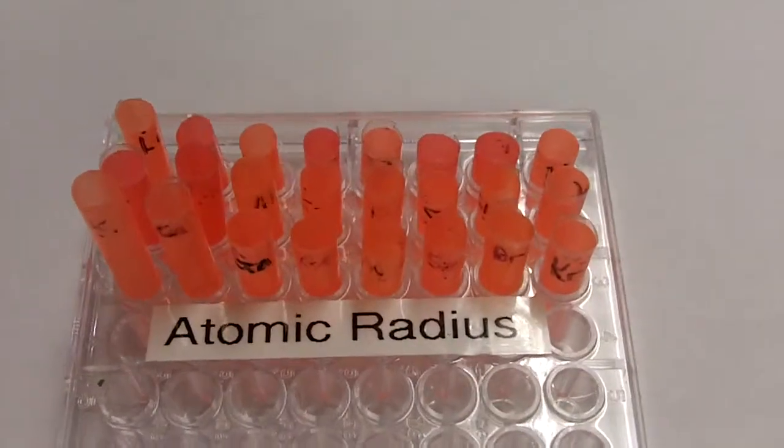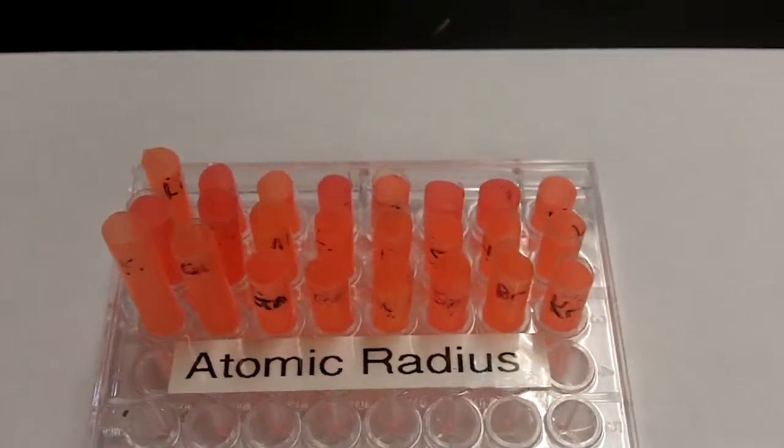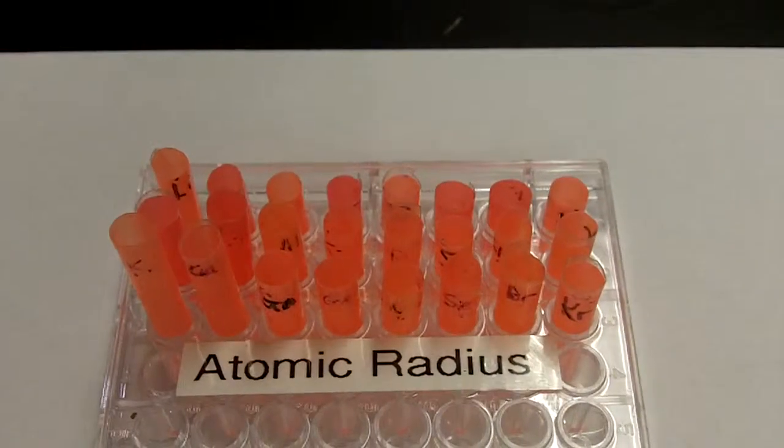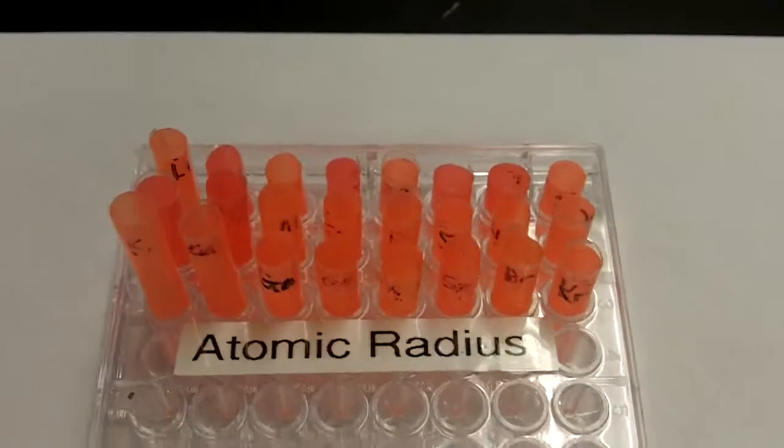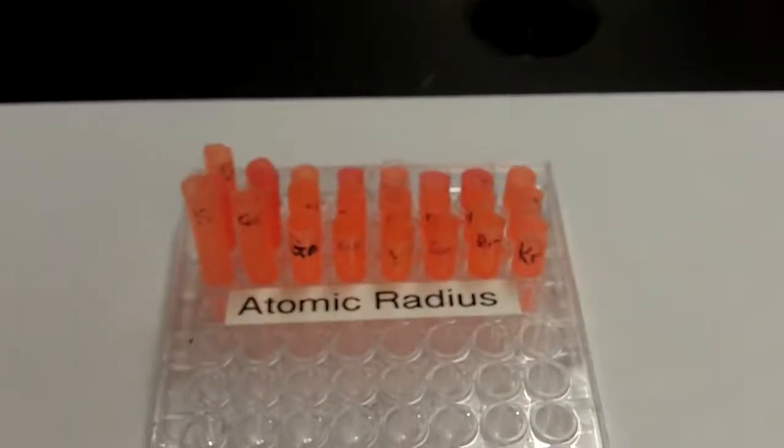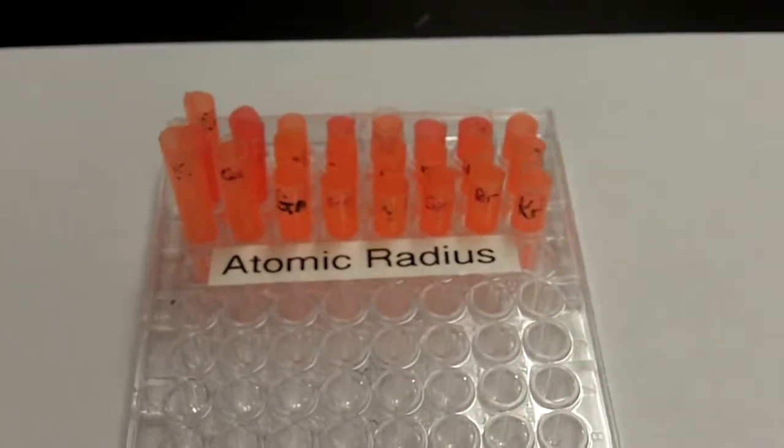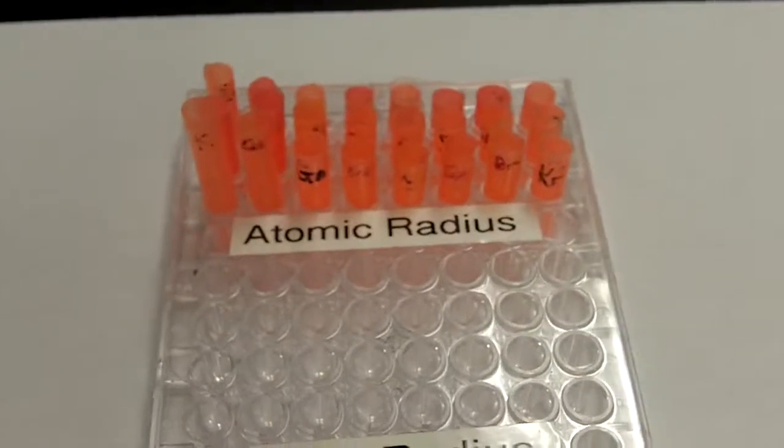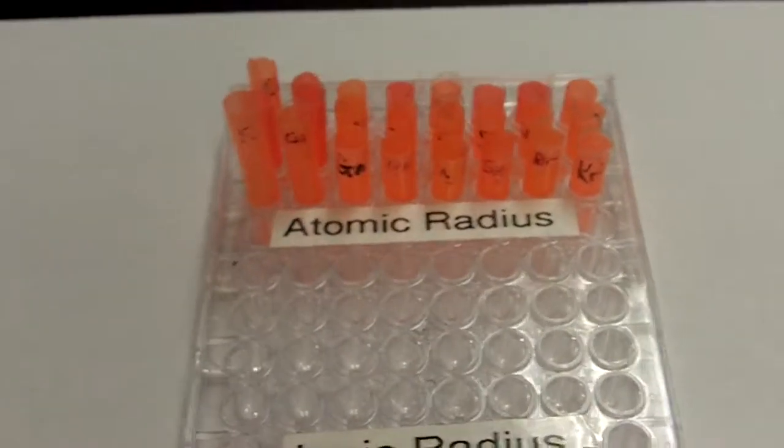Okay, and then here we're looking at atomic radius. Atomic radius refers to the physical dimensions of the atom itself. Remember, the atoms are mostly empty space. The nucleus is very, very small. It's like the ant in the rose bowl. It's very, very tiny. And that's got 99.9% of the mass there.